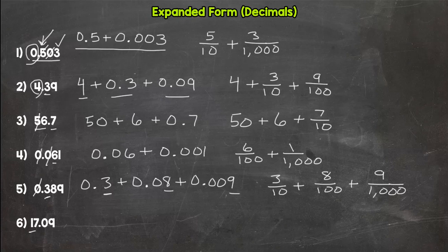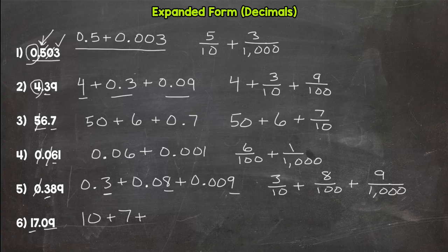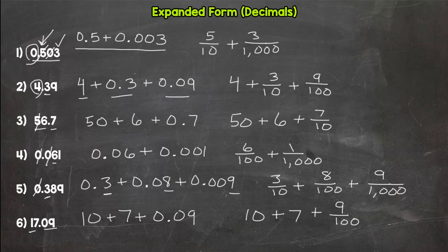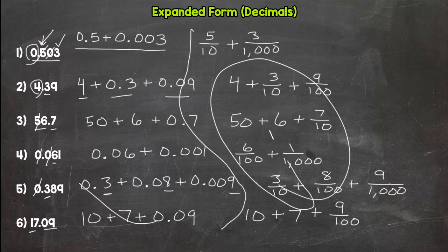Number six: we do have a whole number and a decimal portion. Our one is worth ten, our seven is worth seven, and our nine is worth nine hundredths. Fraction form: ten plus seven plus nine hundredths. Six for six — and that's how you expand out decimals. You can use either fractions or decimals, but you've got to know both.